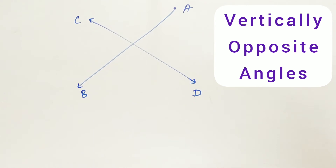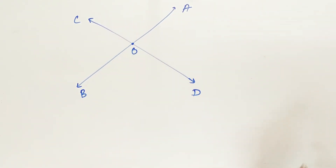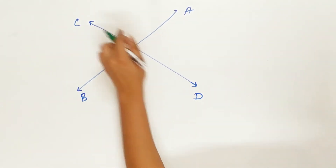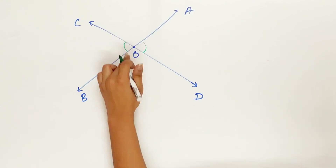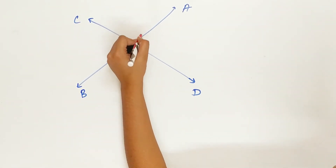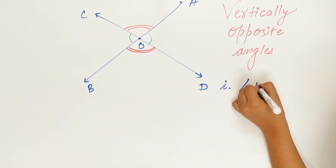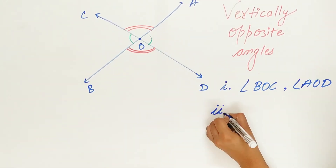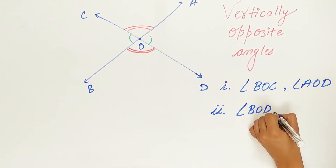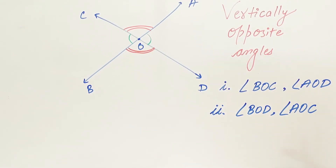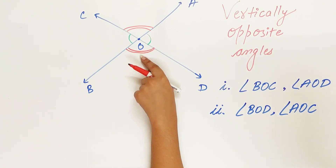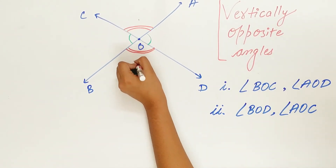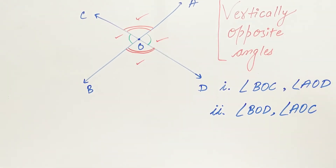AB and CD are two lines that intersect each other at point O. There are two pairs of vertically opposite angles: angle BOC is the vertical opposite of angle AOD, and angle BOD is the vertical opposite of angle AOC. These two are vertically opposite, and these two are vertically opposite.